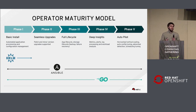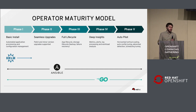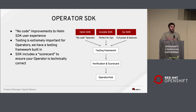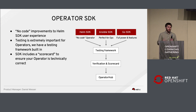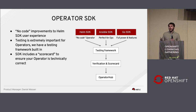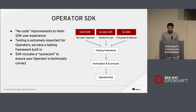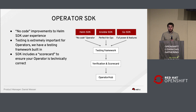Then we have something called a scorecard — a kind of black-box testing for an operator to make sure: can I instantiate this on a cluster? When I give it a custom resource, does it actually do something? There's a proxy that will instrument the Kubernetes API calls it's making so we can verify it's doing the right thing. With all of this, you can rest assured you have a very high-quality operator, because you're trusting your stateful workloads and complex apps to this thing. And eventually there's an Operator Hub which houses all of this.